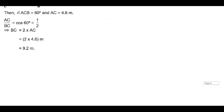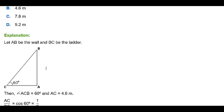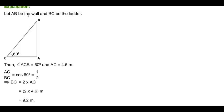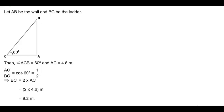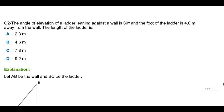We will take another problem. The angle of elevation of a ladder leaning against a wall is 60°, and the foot of the ladder is 4.6 meters away from the wall. Find the length of the ladder. Let AB be the wall and BC be the ladder. Angle ACB equals 60° and AC is given as 4.6 meters. To find BC we use cos: cos 60° = AC/BC = 1/2, so BC = 2 × AC = 2 × 4.6 = 9.2 meters. The correct answer is D.